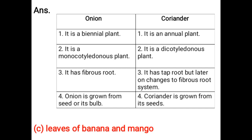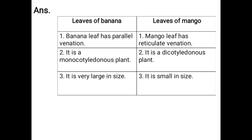Leaves of banana and mango: Banana leaf has parallel venation; Mango leaf has reticulate venation. Banana is a monocotyledonous plant; Mango is a dicotyledonous plant. Banana leaves are very large in size, while Mango leaves are small in size.